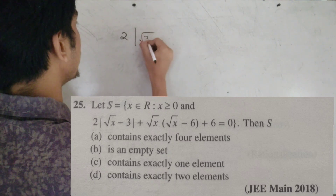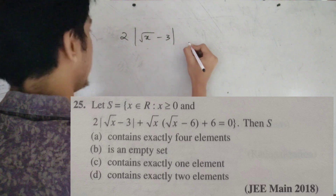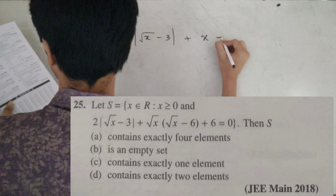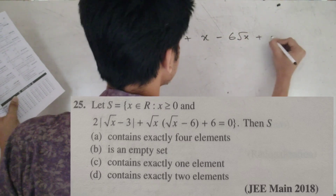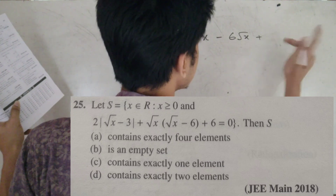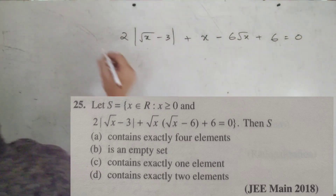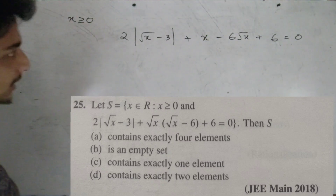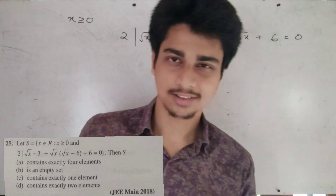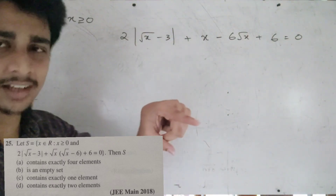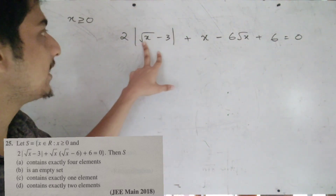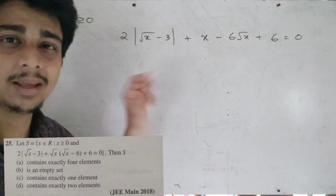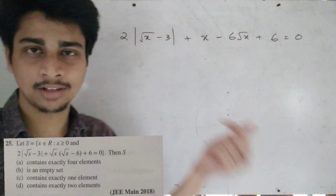The equation is 2|√x − 3| + √x − 6√x + x + 6 equal to 0. The condition is x greater than or equal to 0 for the roots to be real. When √x − 3 is greater than 0, its absolute value is √x − 3; when less than 0, it becomes −(√x − 3), giving 3√x.